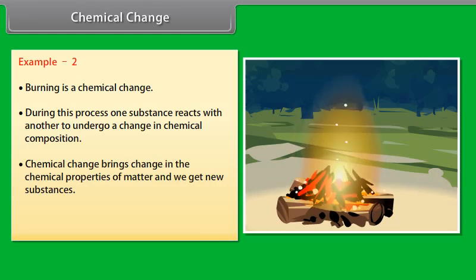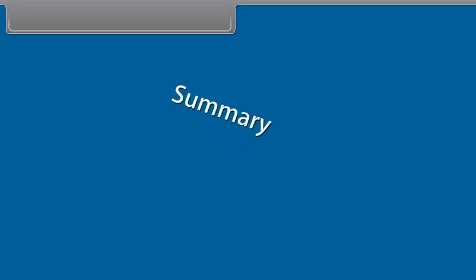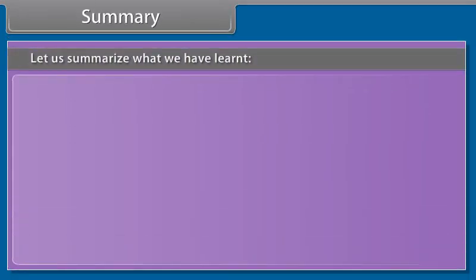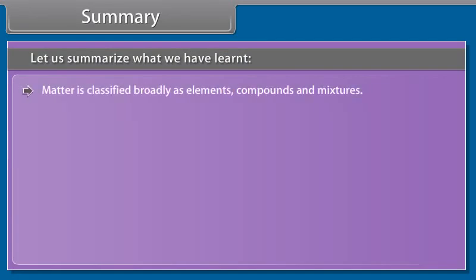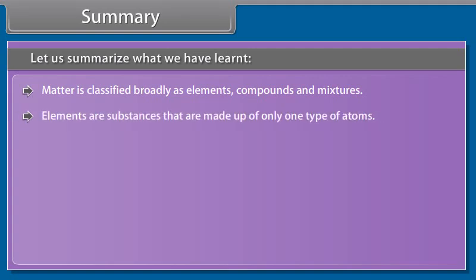Sublimation is used for substances like ammonium chloride, naphthalene, and camphor, which change directly from solid to gaseous state on heating. Sublimation is a process of conversion between the solid and the gaseous phases of matter.